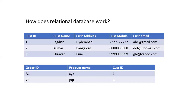Let's see how the database works with a customer and orders example. In the customer table, we have customer IDs (1, 2, 3) with name, address, mobile number, and email. In the orders table, we have order IDs (A1, A2, A3) with product ID, product name, and customer ID. Both tables share the customer ID column, enabling a one-to-one relationship. This allows us to determine, for example, that product XYZ was purchased by customer ID 1, who is Jagdish, living in Hyderabad.